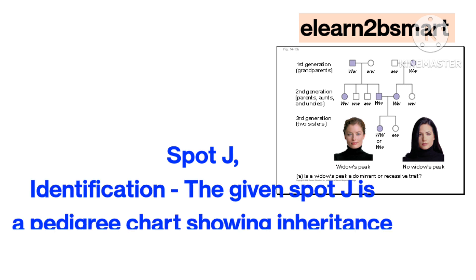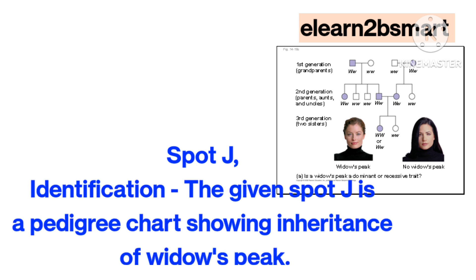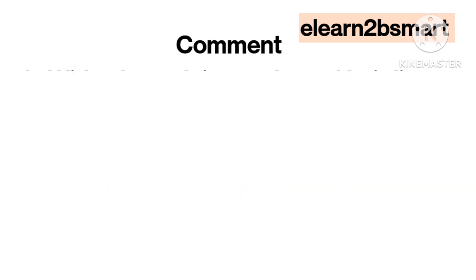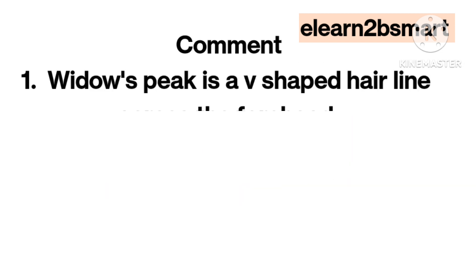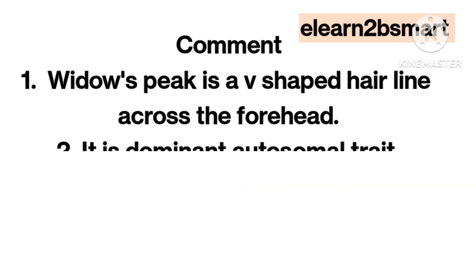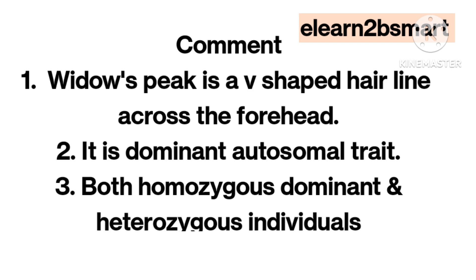Spot J. Identification: The given spot J is a pedigree chart showing the inheritance of widow's peak. Comment 1: Widow's peak is a V-shaped hairline across the forehead. It is a dominant autosomal trait. Both homozygous dominant and heterozygous individuals show the widow's peak trait.